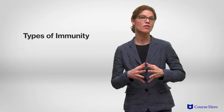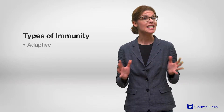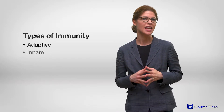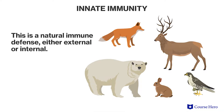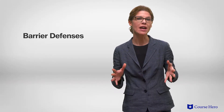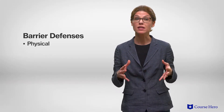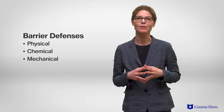There are two types of immunity: adaptive and innate. Innate immunity is a natural immune defense that all animals possess and it can be classified as external or internal. External innate defenses include barrier defenses, which can be physical, chemical, or mechanical.